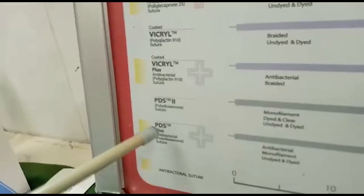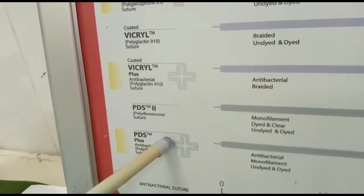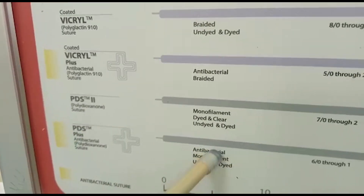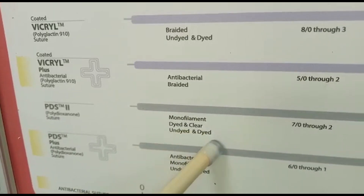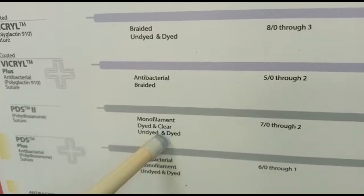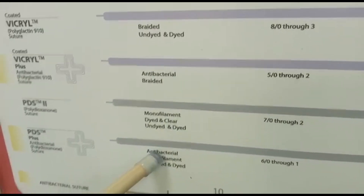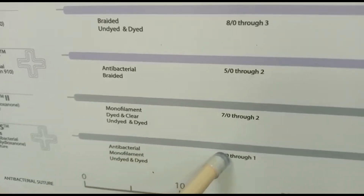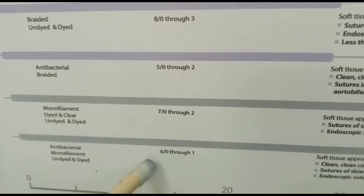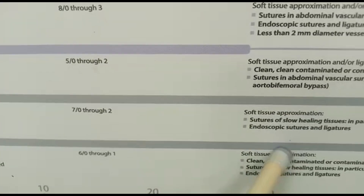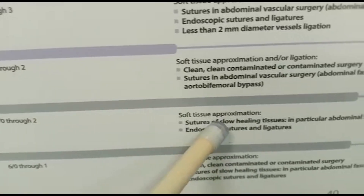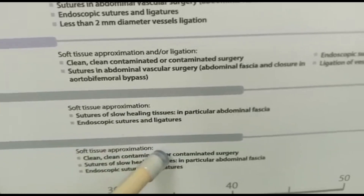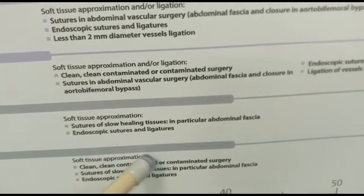Our last absorbable suture is PDS. PDS is a monofilament suture that comes in dyed and undyed varieties. There is plain PDS and PDS impregnated with antibiotics. They come in different sizes — 7-0 through 2 and 6-0 through 1. PDS is mostly used to close tissues in endoscopic surgeries and in fascias.